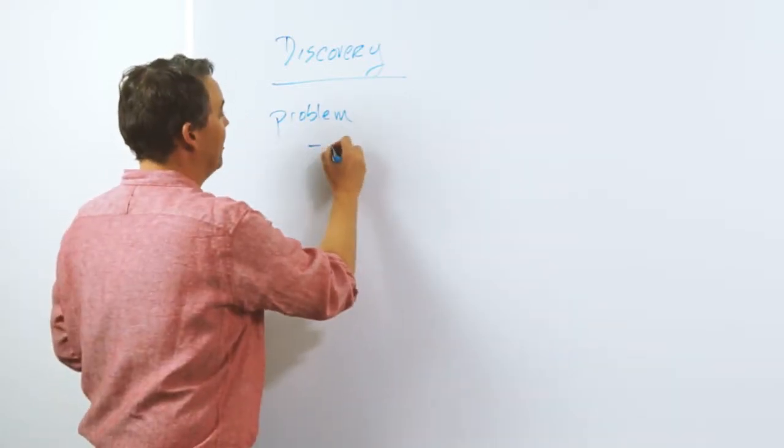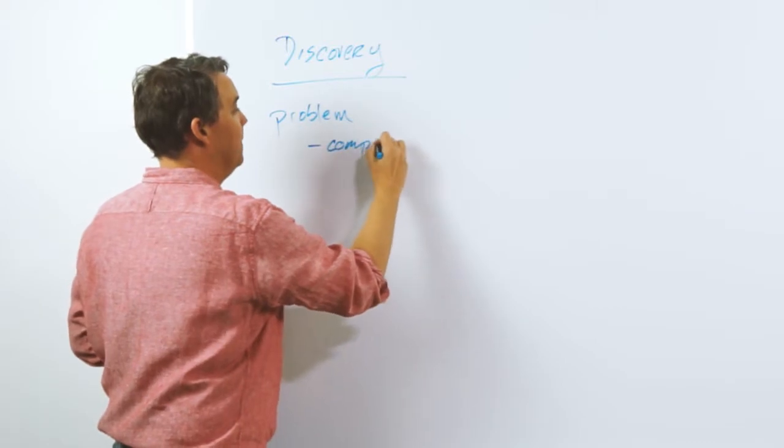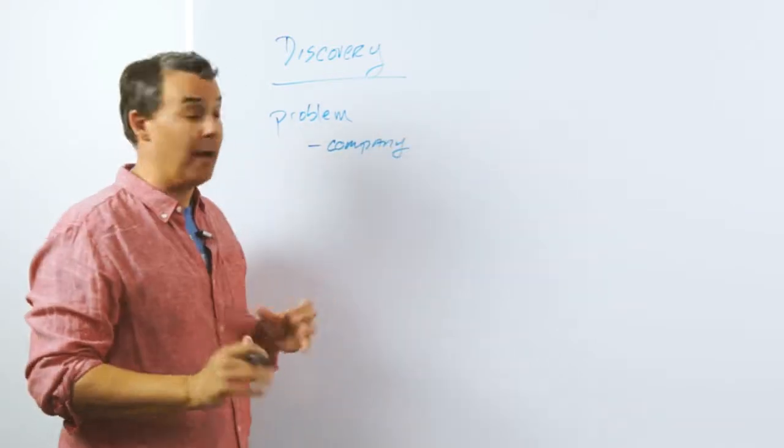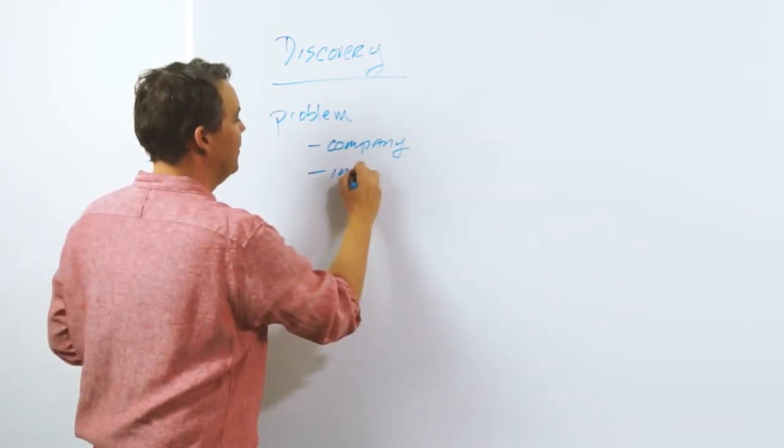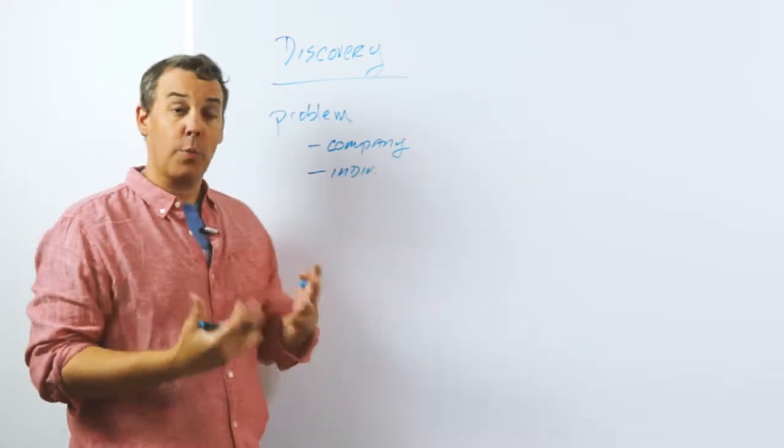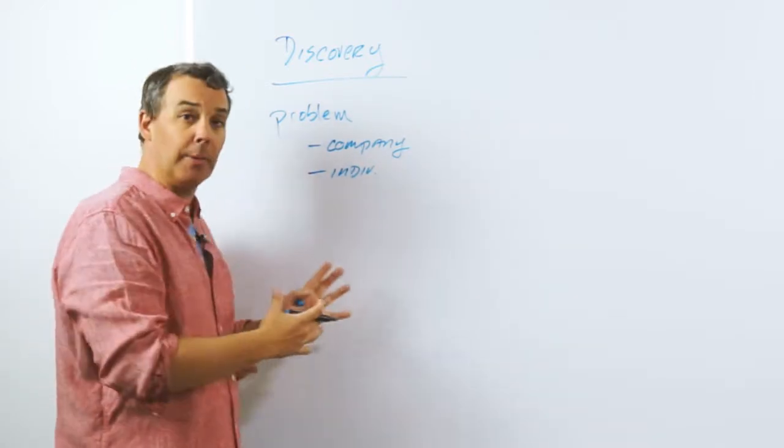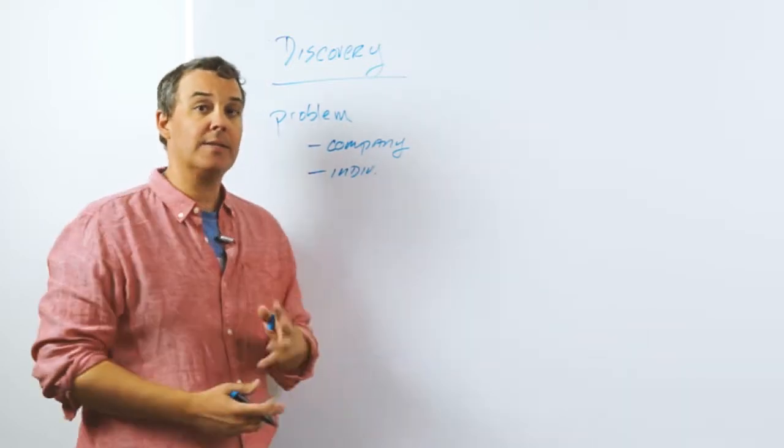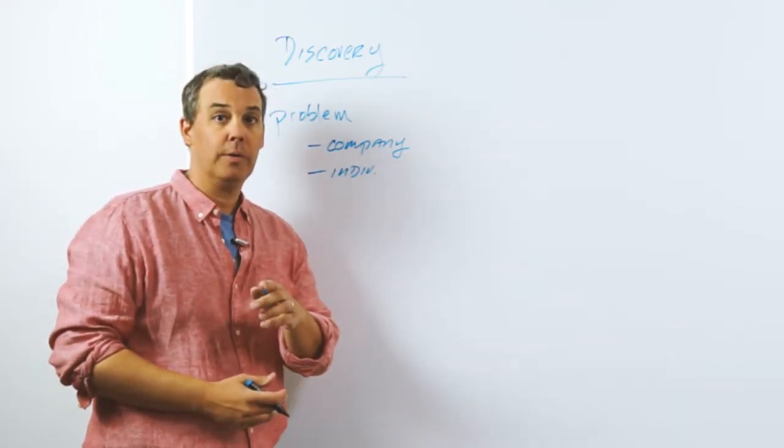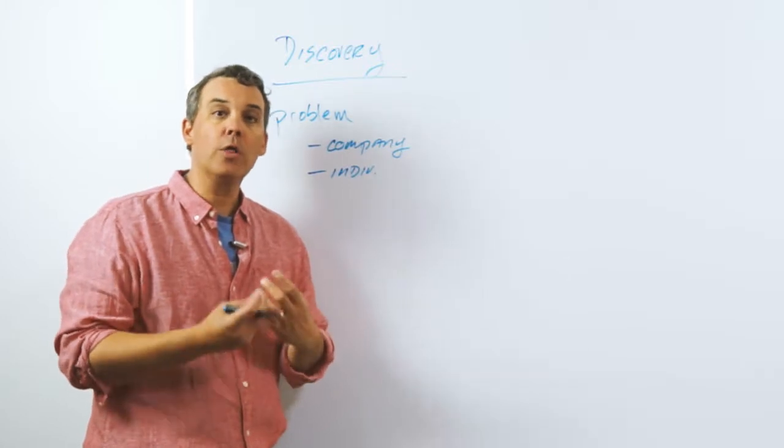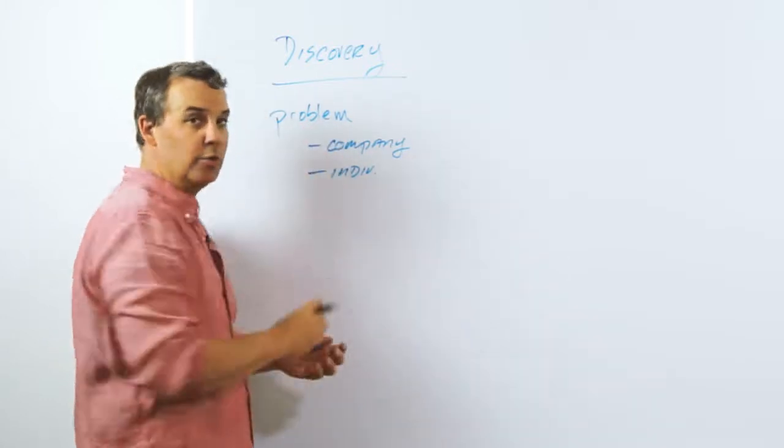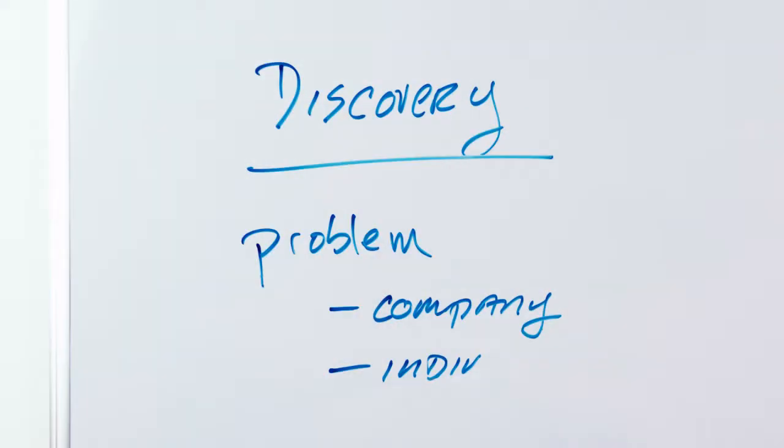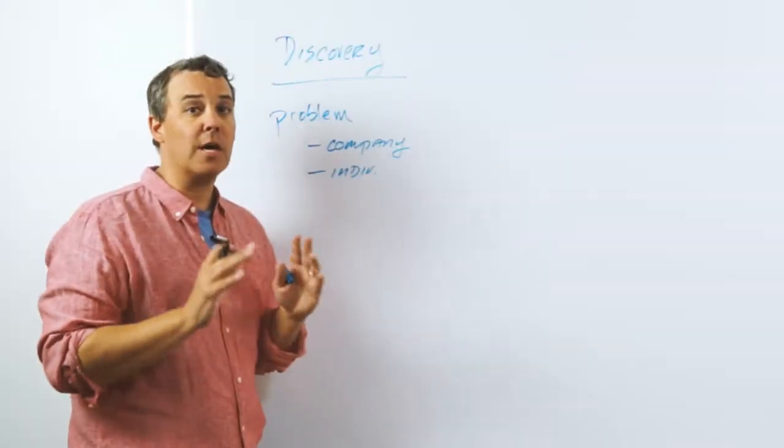So I want you to think about the problem from the company point of view, which we just spoke about, and the individual point of view. So what I like to say is, okay, what's the problem? Tell me about it. What does that do for your company? Then I like to say, what does that do for you? And I pause because I want to learn what the ultimate solution is going to do for that person that I'm talking to or his or her team. Take notes. Think about that. This is the critical part.